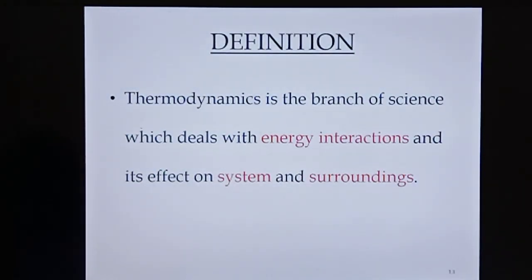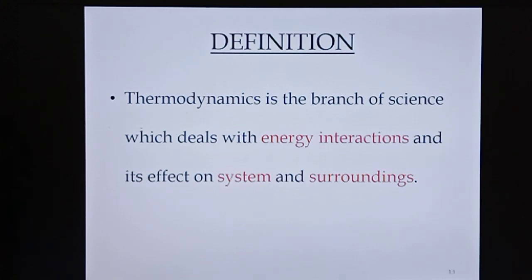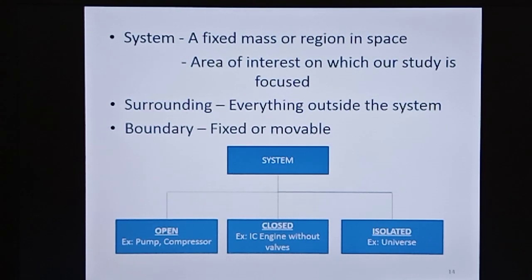Next, what is thermodynamics? Thermodynamics is the branch of science which deals with energy interaction and its effect on the system and surroundings. There are three important parameters: energy interaction, system, and surrounding. Energy is the ability to cause changes. System is our region of study or area of interest. Whatever is outside the system is the surroundings. A system is a fixed mass or region in space on which our study is focused.